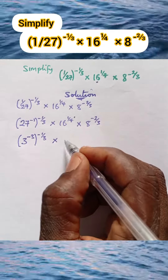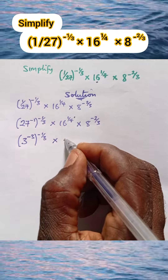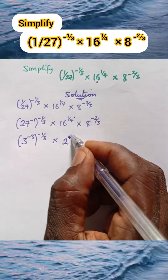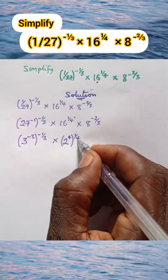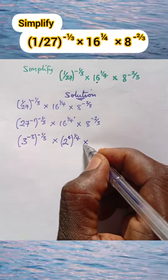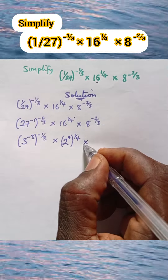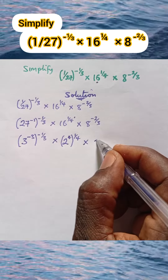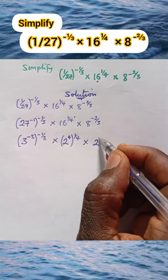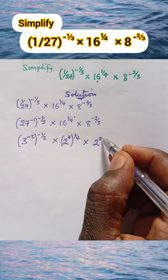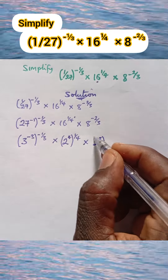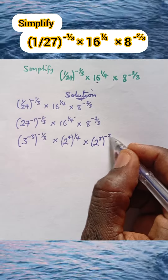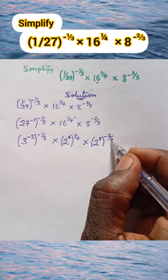Multiply: 16 is the same thing as 2 raised to the power of 4, all in brackets, raised to the power of 1 over 4. Multiply similarly, 8 is 2 raised to the power of 3, all in brackets, raised to the power of negative 2 over 3.